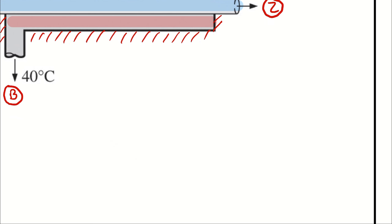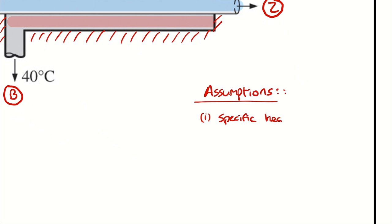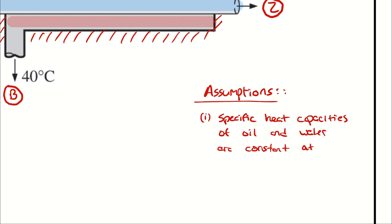Setting up our assumptions: first, the specific heat capacities of the oil and water are constant — and furthermore, I will assume they are constant at 300 Kelvin. Making that assumption allows us to determine which specific heat capacity values to use from the book. That additional parameter is based on the fact that the specific heat capacity available for oil is only given at 300 Kelvin.